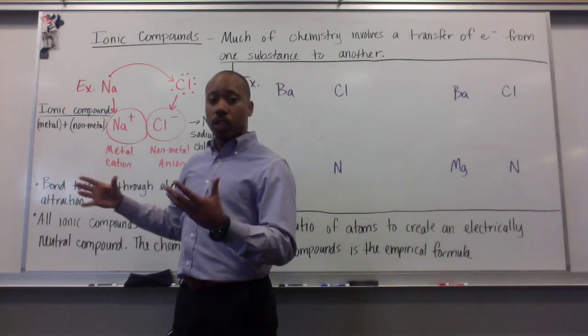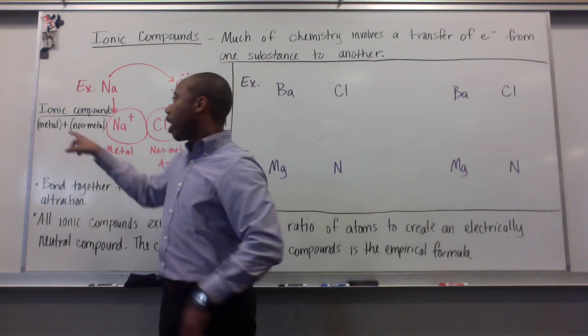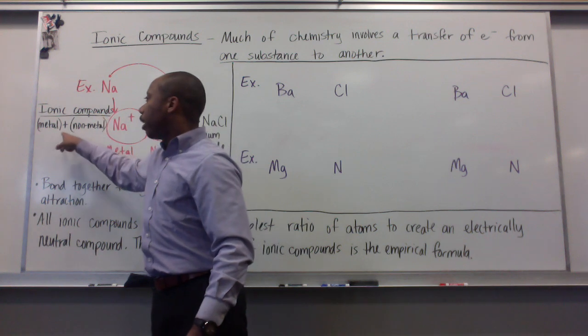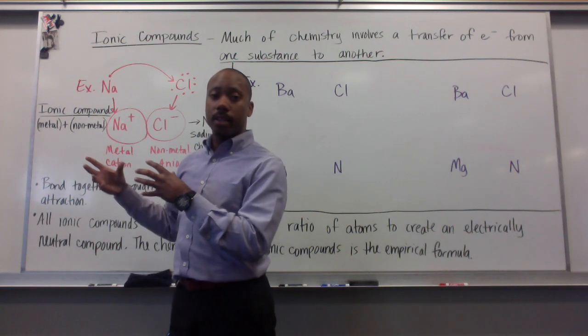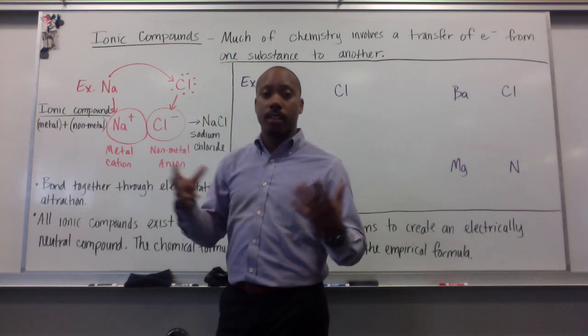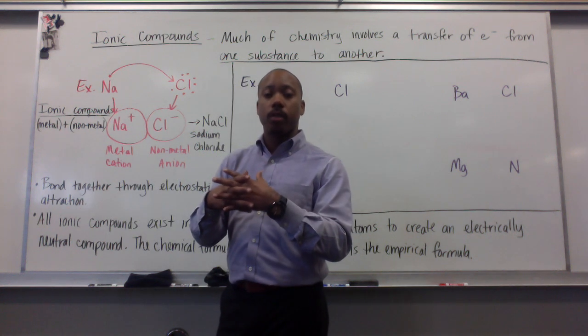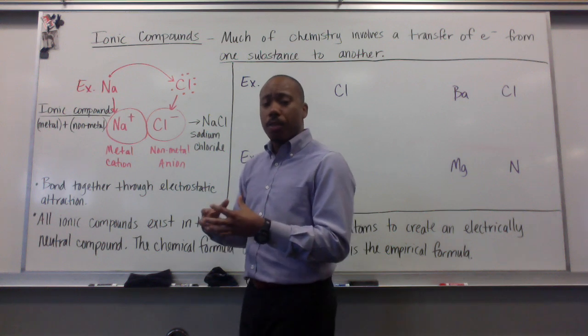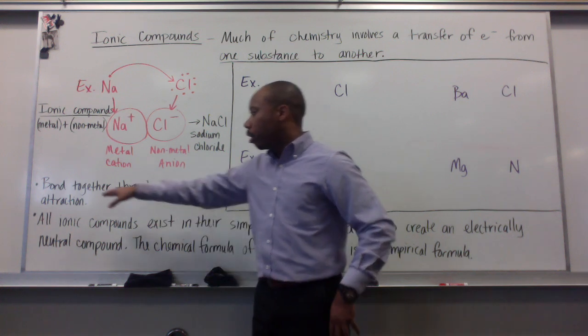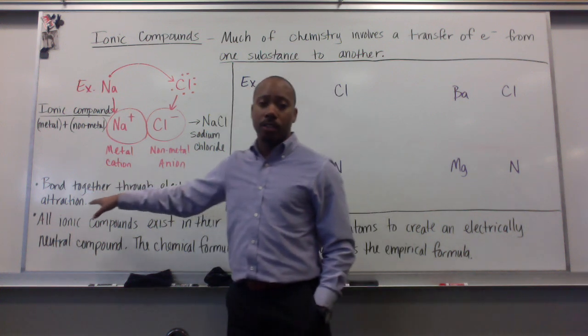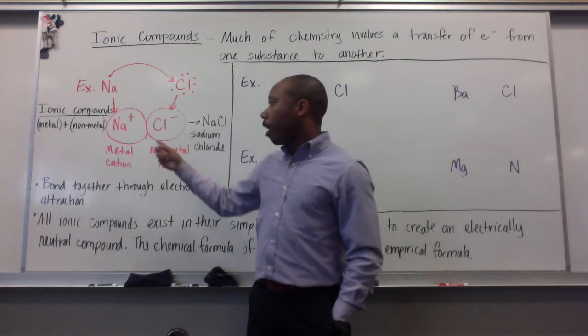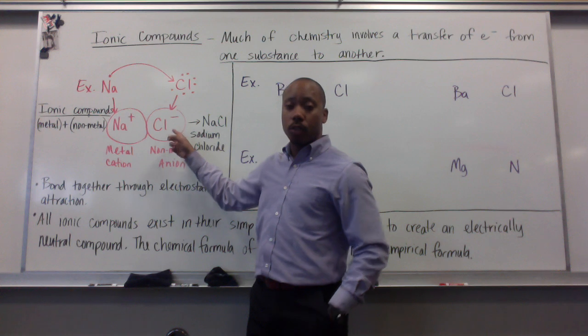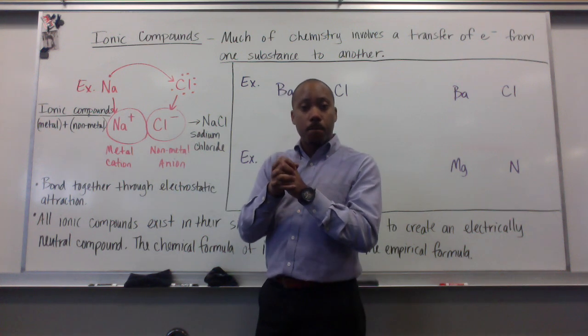In ionic compounds, generally we have this type of makeup. We have, for ionic compounds, a metal and a non-metal makes the compound. So, we have a metal cation and a non-metal anion coming together to form a compound. They come together and form this compound through electrostatic interaction or electrostatic attraction.